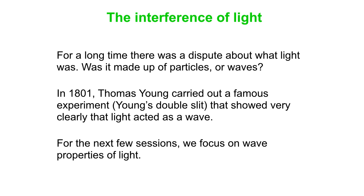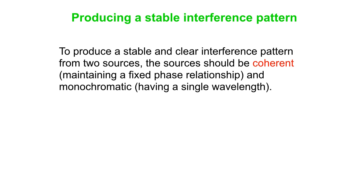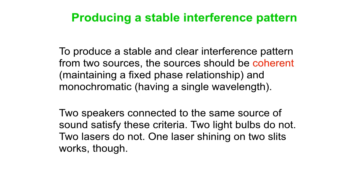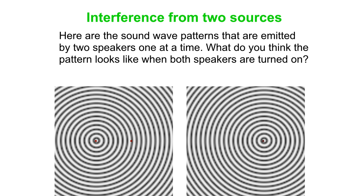In terms of constructive and destructive interference. We're going to focus the next few sessions on wave properties of light. To produce a stable interference pattern, you need coherent sources — they maintain a fixed phase relationship — and it really helps to have monochromatic light. Thomas Young did not have a monochromatic source, so it was amazing that he did what he did. Two individual light bulbs do not produce a coherent pattern, neither do two separate lasers, but a single laser or single light source shining on two slits does it for you.